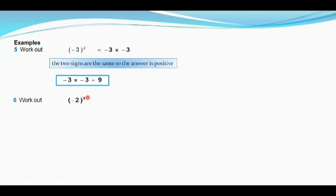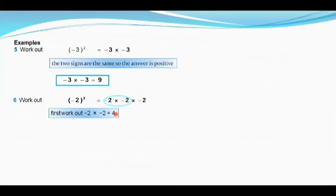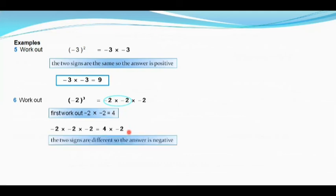One more question: minus 2 raised to the power 3. When a negative base has an odd power, the answer is negative. We multiply minus 2 three times. First, minus 2 times minus 2: same signs give positive 4. Then 4 times minus 2: one positive and one negative gives negative 8. So minus 2 cubed is minus 8. Keep practicing — subscribe for new updates, and have a good day!